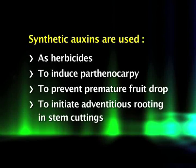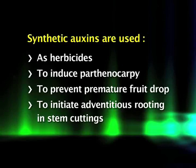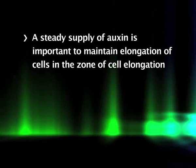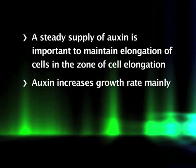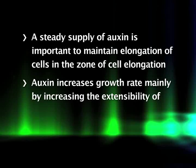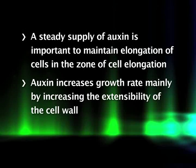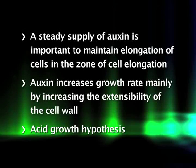Synthetic auxins are used as herbicides, to induce parthenocarpy, prevent premature fruit drop, and initiate adventitious rooting in stem cuttings. Auxins stimulate cell elongation in the zone a few millimeters below the apical region. A steady supply of auxin is important to maintain elongation of cells in this zone. Auxin causes a five- to tenfold increase in growth rate mainly by increasing the extensibility of the cell wall.